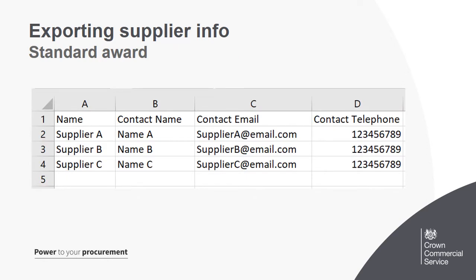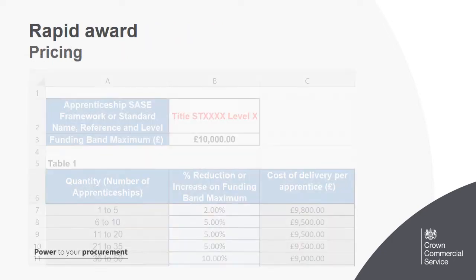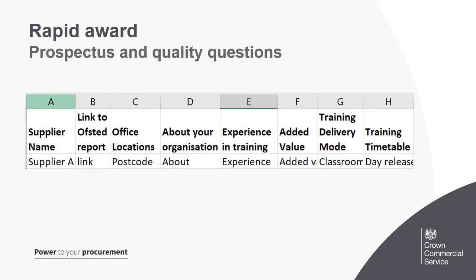If you went the standard award route, clicking export would get you the shortlisted suppliers' contact info — use this to invite suppliers to bid through your preferred online procurement tool. If you went the rapid award route, clicking export will get you the shortlisted suppliers' contact, prospectus, and pricing information. Each supplier will have a pricing sheet for the apprenticeship standard or off-the-shelf training course you've chosen, along with any volume discounts and additional services offered, as well as prospectus info, social value initiatives, and answers to pre-asked quality questions. Use this to evaluate suppliers based on your chosen requirements and weightings and rapid award to the winning supplier.